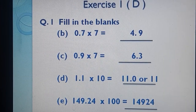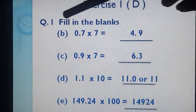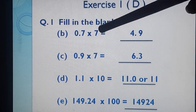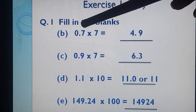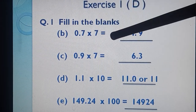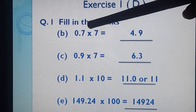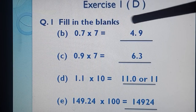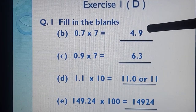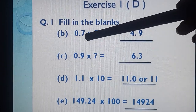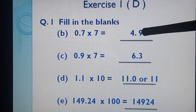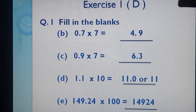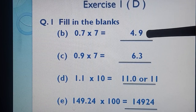Now let's start exercise 1D, which is based on multiplication and its properties. First question, filling the blanks. 0.7 × 7: first we leave the decimal. 7 sevens are 49. After decimal there is only 1 digit, so in our answer after decimal we want 1 digit. Starting from the last digit, we mark 1 place — that is 9 — and put the decimal. Our answer is 4.9.